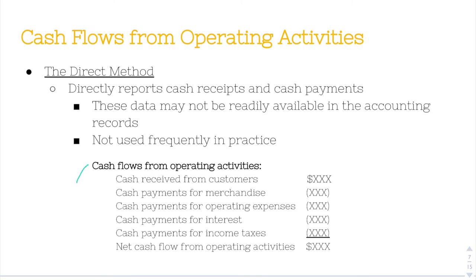This right here is what the direct method would look like. It would say cash flows from operating activities, and you would take cash received from customers — that's one large sum, likely what you got in revenue — and then you just subtract everything else that's an outflow: cash payments for merchandise, cash payments for operating expenses, cash payments for interest, cash payments for income taxes, and any other items. Then you would get net cash flow from operating activities.